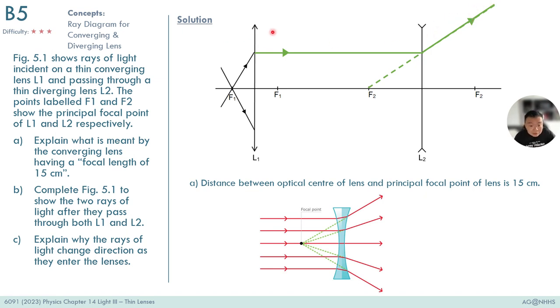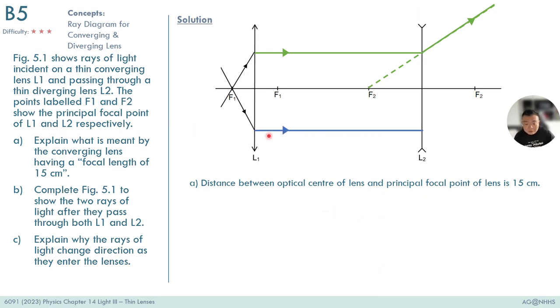One thing to note, a converging lens is drawn this way. This is the way and symbol to draw a diverging lens. Take note of this. Doing the same thing for the other ray, I'll get this ray diagram.